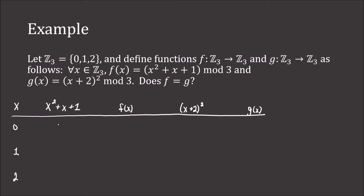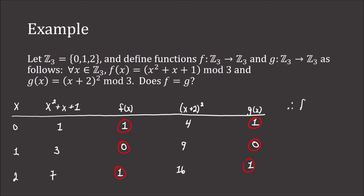For x = 0: x² + x + 1 = 1, and mod 3 is 1; (0 + 2)² = 4, mod 3 is 1. For x = 1: x² + x + 1 = 3, mod 3 is 0; (1 + 2)² = 9, mod 3 is 0. For x = 2: x² + x + 1 = 7, mod 3 is 1; (2 + 2)² = 16, mod 3 is 1. All values match, so we conclude that f equals g.